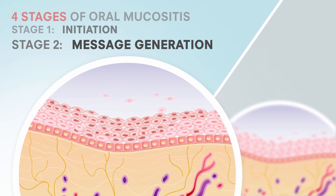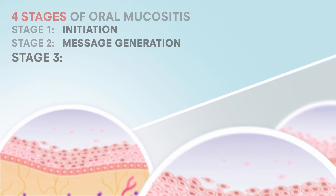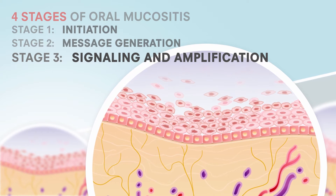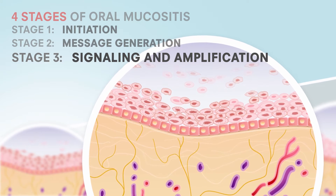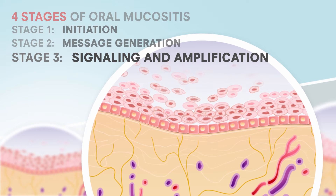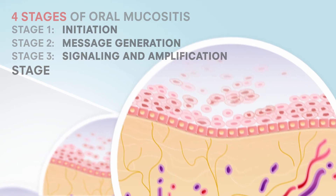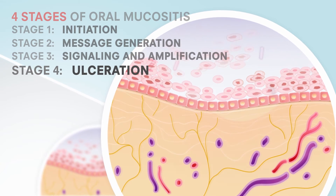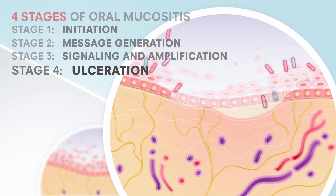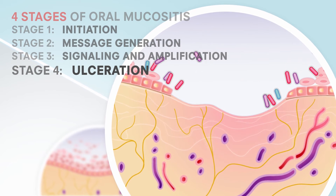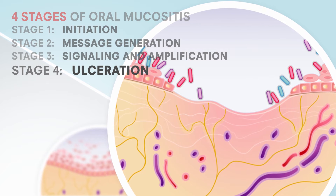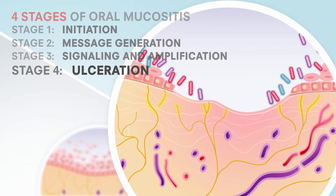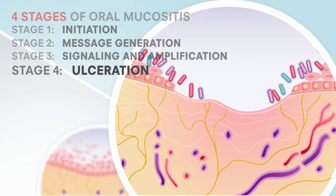Symptoms include redness and swelling. The third stage is called signaling and amplification, where mediators from the initial injury lead to additional tissue destruction. During the fourth or final stage, known as ulceration, mouth injuries become clinically evident. Nerves become exposed, pain is often severe, and infection is common, especially oral pharyngeal candidiasis, also known as thrush.